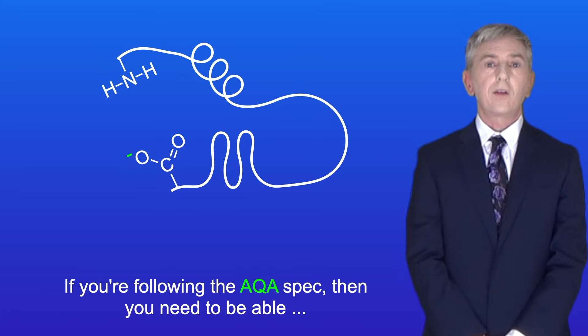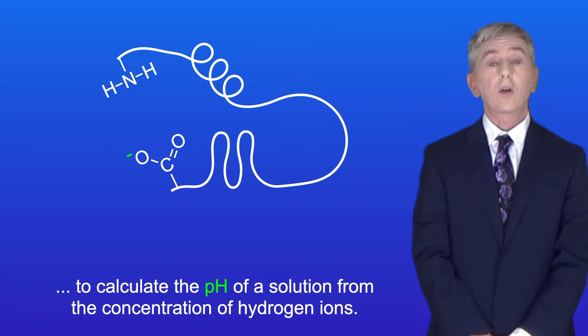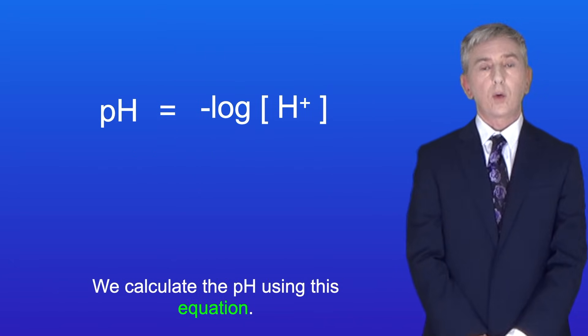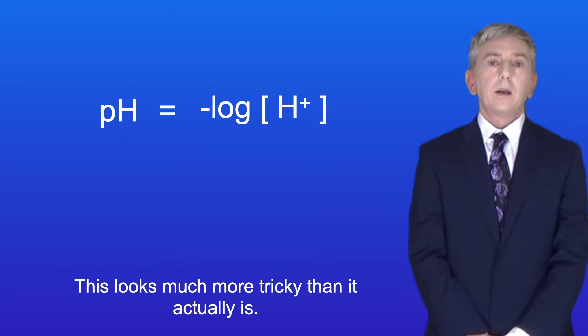Okay, now if you're following the AQA spec, then you need to be able to calculate the pH of a solution from the concentration of hydrogen ions. We calculate the pH using this equation. The pH equals the negative log of the concentration of hydrogen ions.